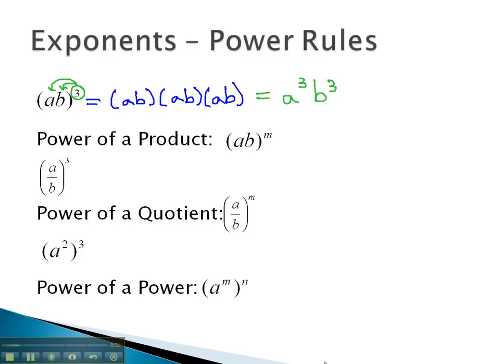This is called the power of a product, where we take the exponent and place it onto each factor. a to the m times b to the m. We put the exponent on each factor.